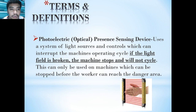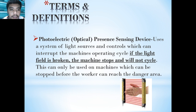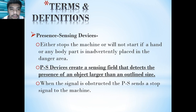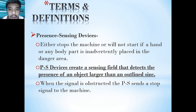Photoelectric optical presence sensing devices use a system of light sources and controls which can interrupt the machine's operating cycle. If the light field is broken, the machine stops and will not cycle.